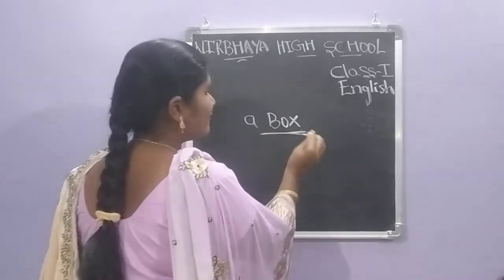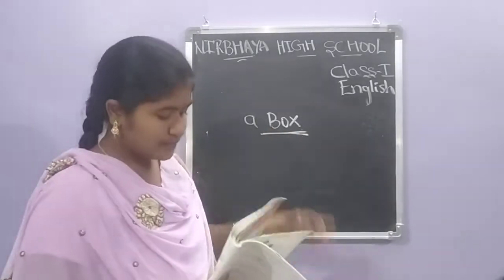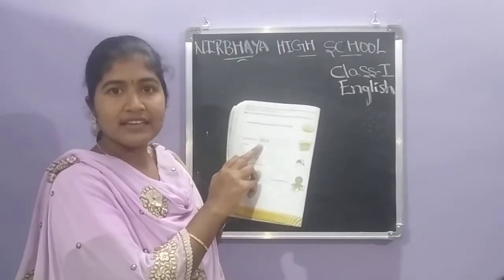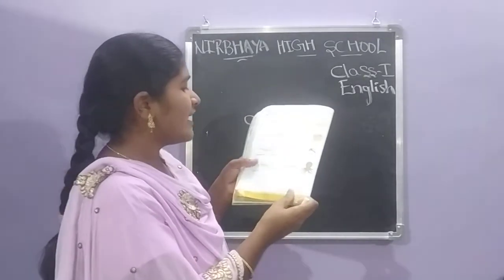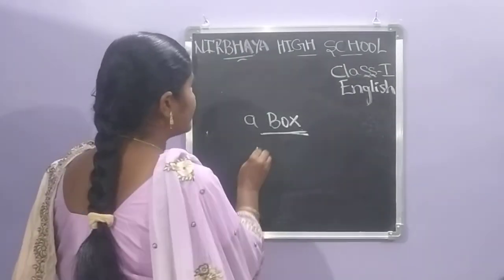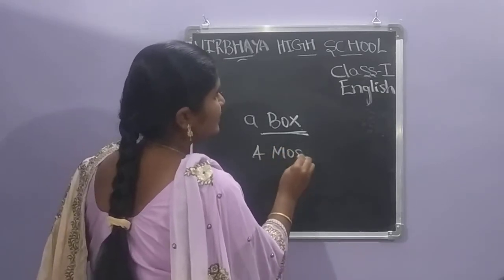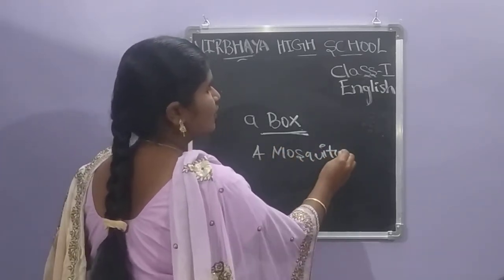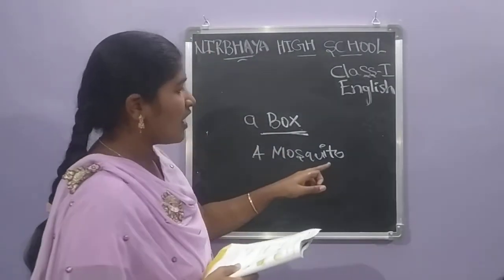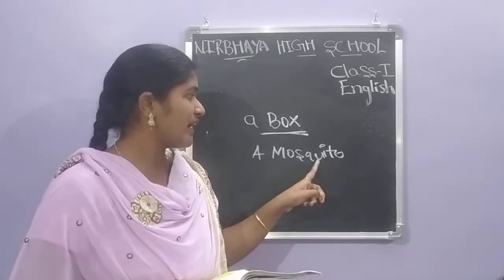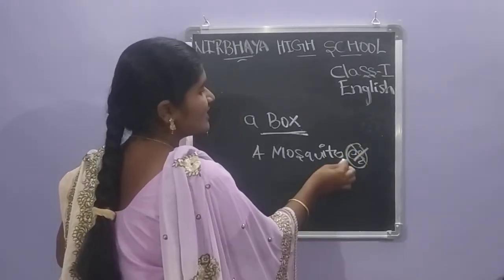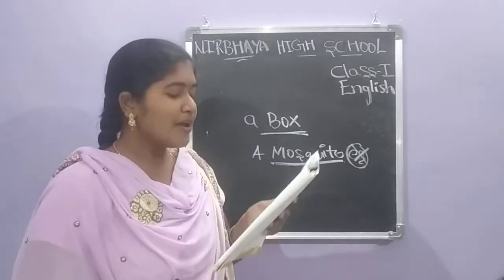We have to write 'box' — B-O-X. Next one: A dash sat on his arm — a mosquito. Only one mosquito is sitting on the arm, so one means singular form. We remove the ES and we have to write singular form — a mosquito.